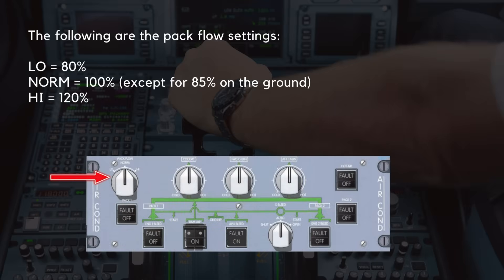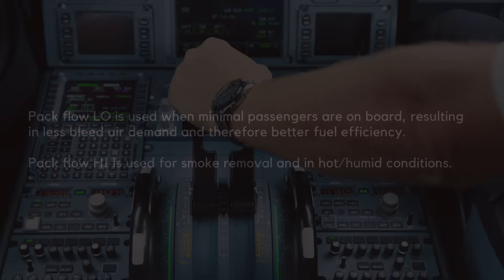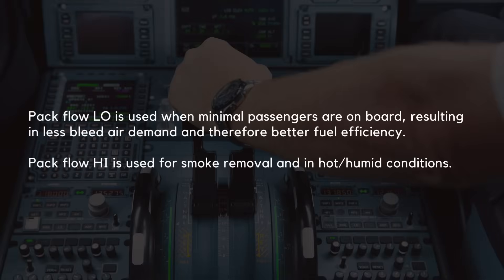The following are the PAC flow settings: Low equals 80%. Normal equals 100%, except for 85% on the ground. High equals 120%. PAC flow low is used when minimal passengers are on board, resulting in less bleed air demand and therefore better fuel efficiency. PAC flow high is used for smoke removal and in hot, humid conditions.